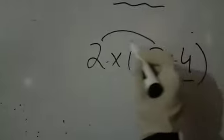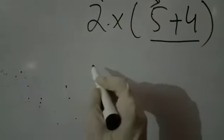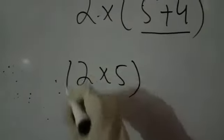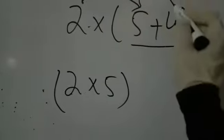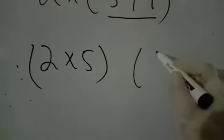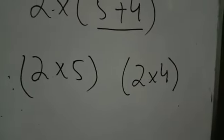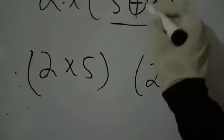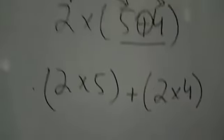When you multiply, firstly you will multiply with two — you will write here two into five and put a small bracket around it. Then you will multiply two with four and write here two into four with a small bracket around it. In the middle, plus is given, so you will write plus.